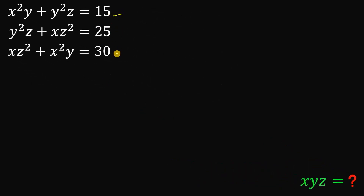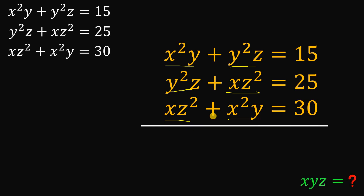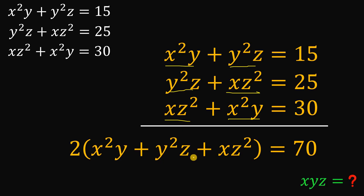Given these three equations, the goal is to find the product of x, y, z. Notice that across the three equations, we have two terms consisting of x squared y, two terms consisting of y squared z, and two terms consisting of xz squared. So our first step is to add all three equations together. If we do that, we get two times the quantity x squared y plus y squared z plus xz squared equals 15 plus 25 plus 30, which is 70. Dividing both sides by 2, the sum of these three terms equals 35.